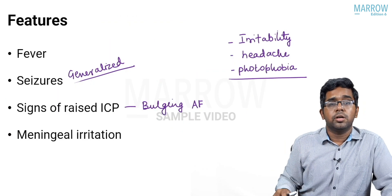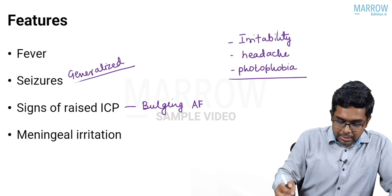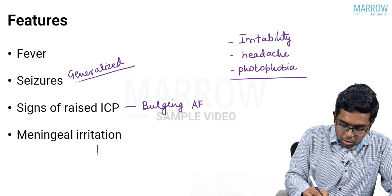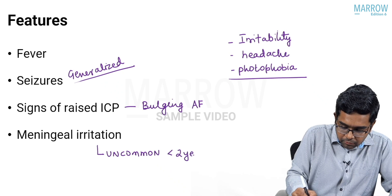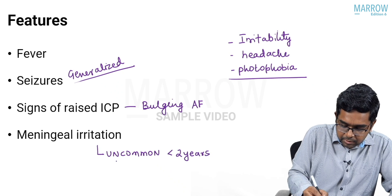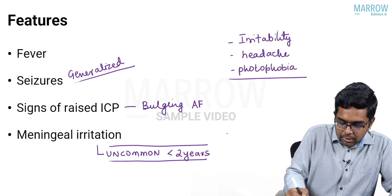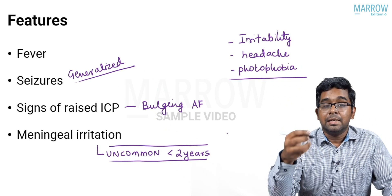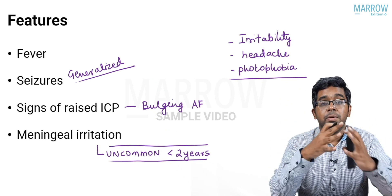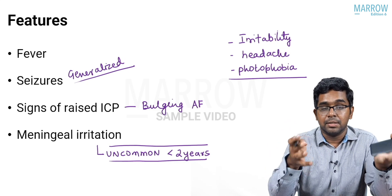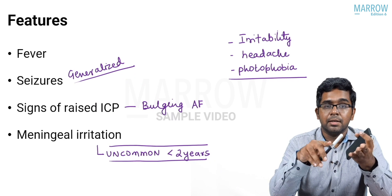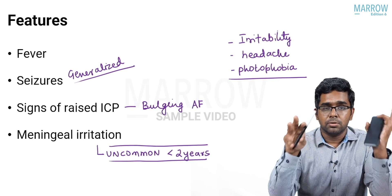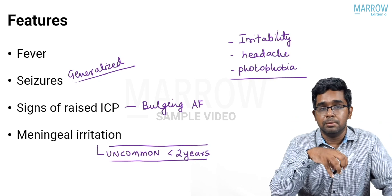An important point: signs of meningeal irritation are uncommon in a child less than two years of age — a very important point. In a young child you may not expect meningeal signs. Instead, you may get fever, irritability, and bulging fontanelle as features of meningitis. This point should always be remembered.